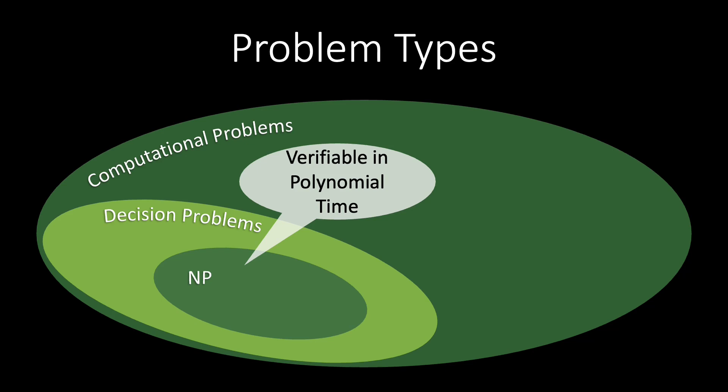We saw this for the vertex cover problem. If we give you a set of vertices, you can verify in polynomial time whether it is a valid vertex cover and has the correct size. There are a lot of decision problems that are in NP, meaning that for many decision problems we can verify a solution in polynomial time.